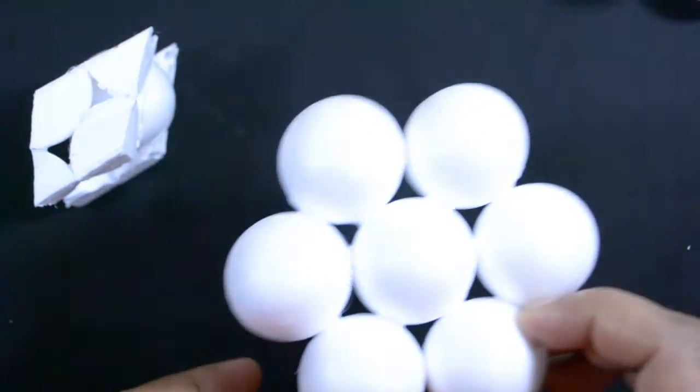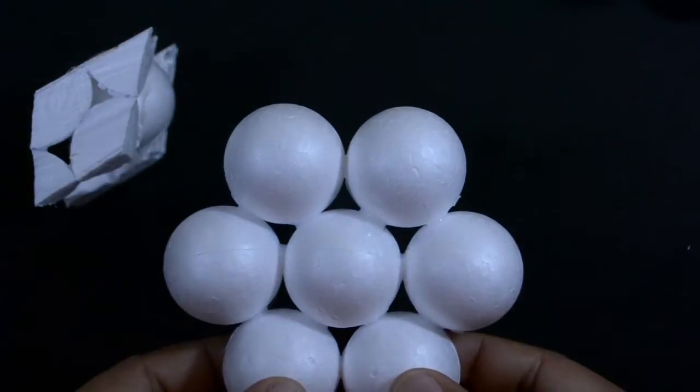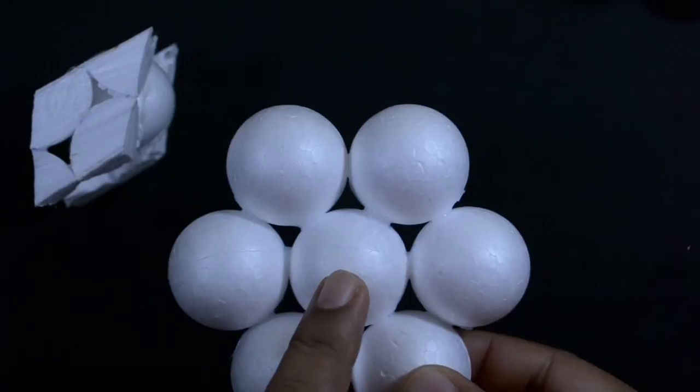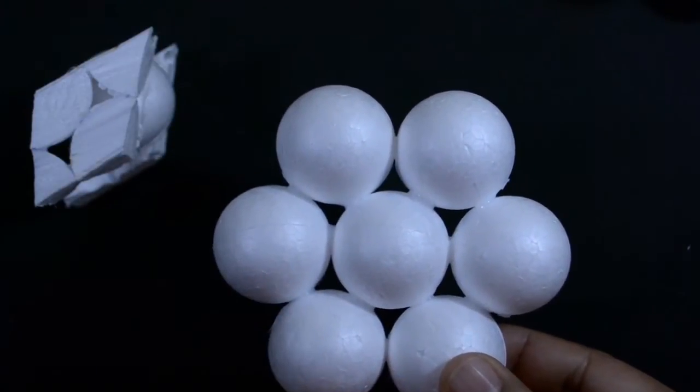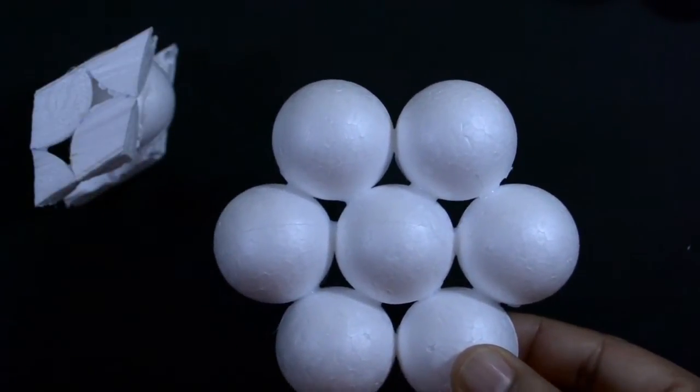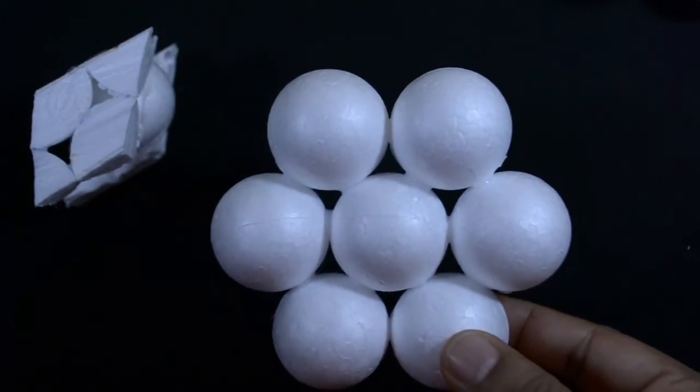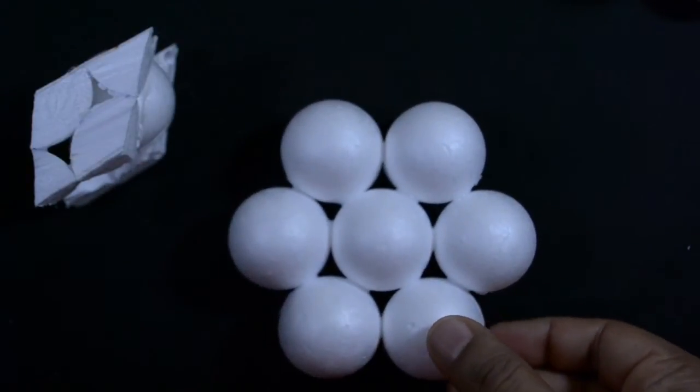And if we look at how many spheres it is in contact with within its own plane, it is in contact with six. This means that the hexagonal closed-packed structure has a total coordination number of 12.